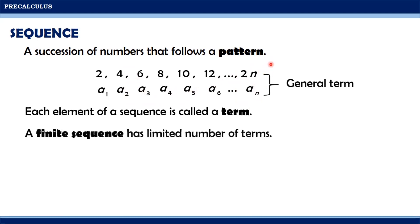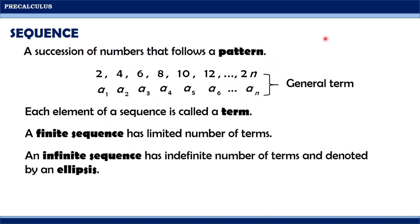Moreover, if a sequence has a definite number of terms, we call that a finite sequence. On the other hand, if a sequence has an indefinite number of terms, we call that an infinite sequence, and it usually ends with an ellipsis.